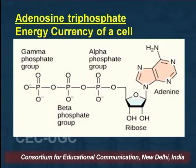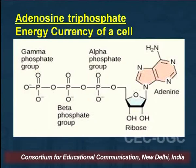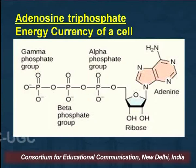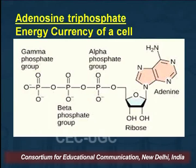A very important example is adenosine triphosphate (ATP), which you can see on your screens. When we talk of adenosine triphosphate, it is a nucleotide — but this nucleotide resembles RNA. Why does it resemble RNA? Because it has ribose sugar in it.